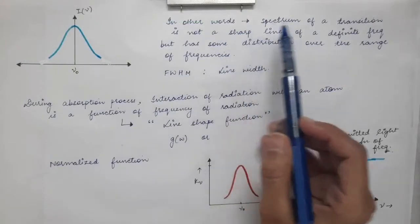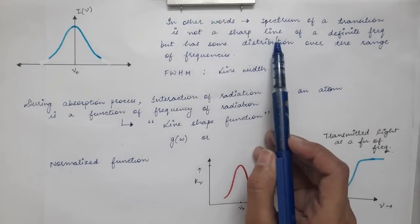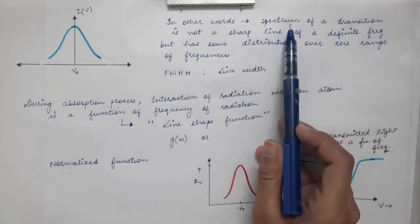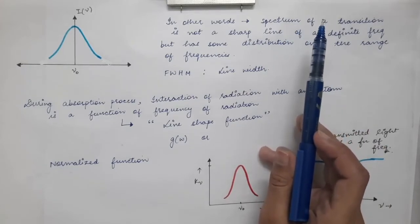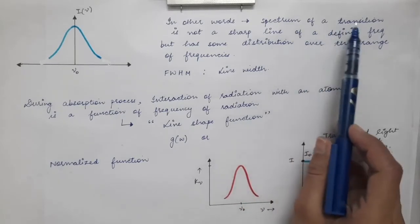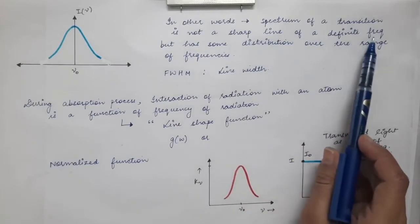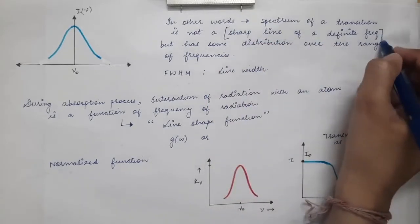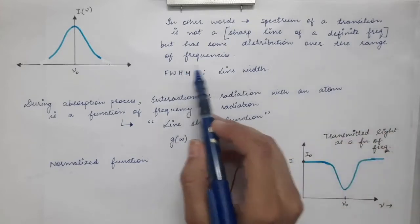In other words, the spectrum of a transition is not a sharp line of a definite frequency. The photons emitted have a range of frequencies — it is not a single frequency but a distribution over a range of frequencies.